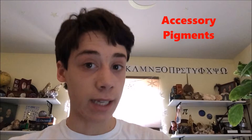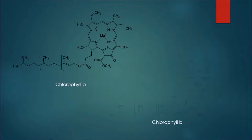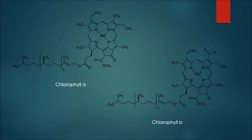The accessory pigments are light-absorbing molecules that assist chlorophyll A in the absorption of light. Chlorophyll B is an example. It is similar to chlorophyll A in molecular structure, and its absorption peaks at around 453 to 642 nanometers in the blue and more orangey-red regions, which is not too far from chlorophyll A.